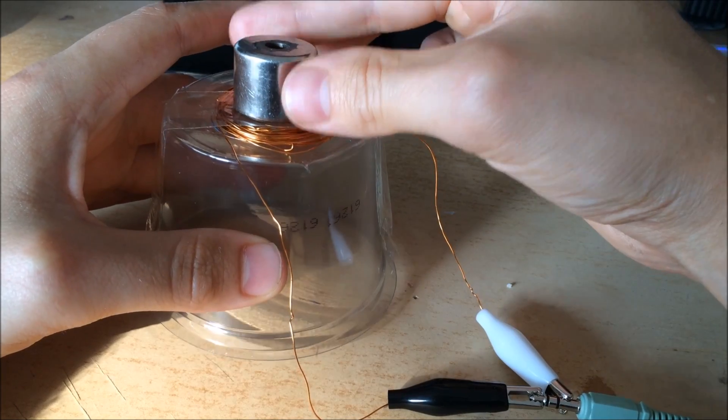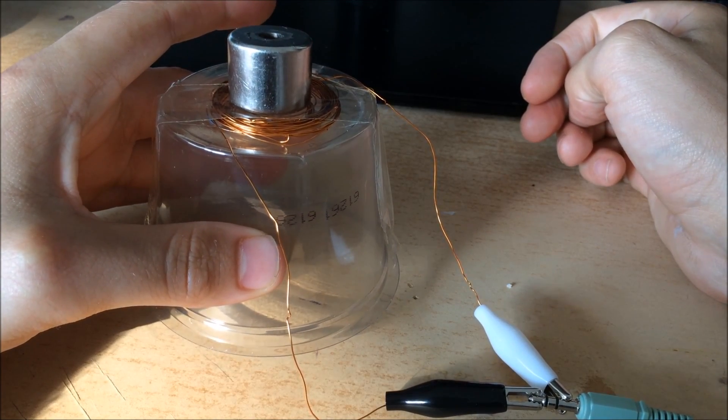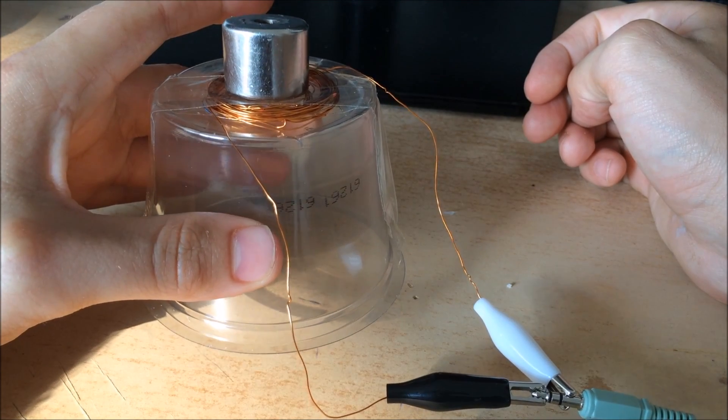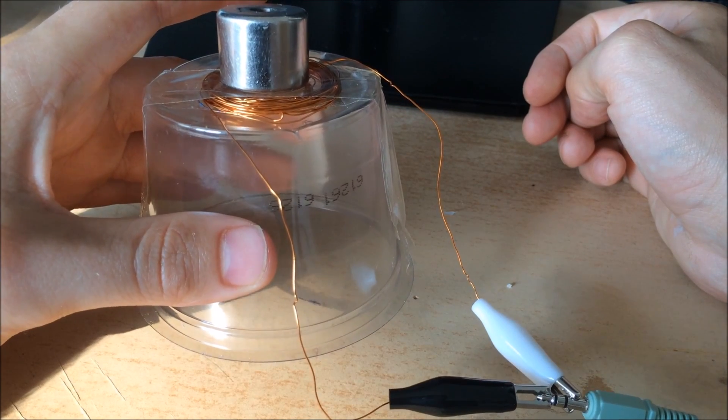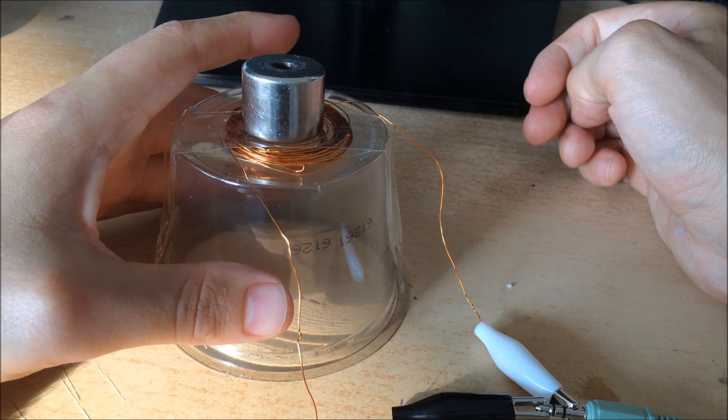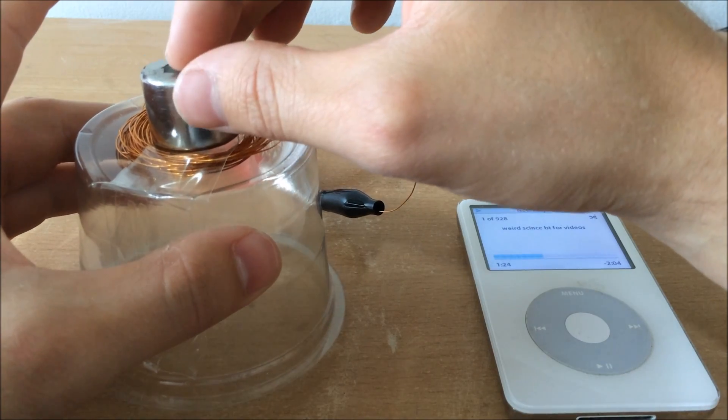The electrical current running down the jack is being magnetized by the coil of wire in the same way as an electromagnet, and when combined with the neodymium magnet, the coil causes the air to vibrate in such a way that it creates a sound wave.